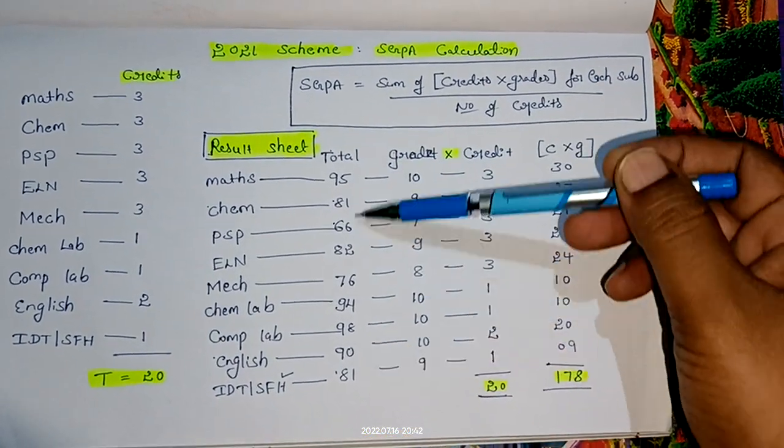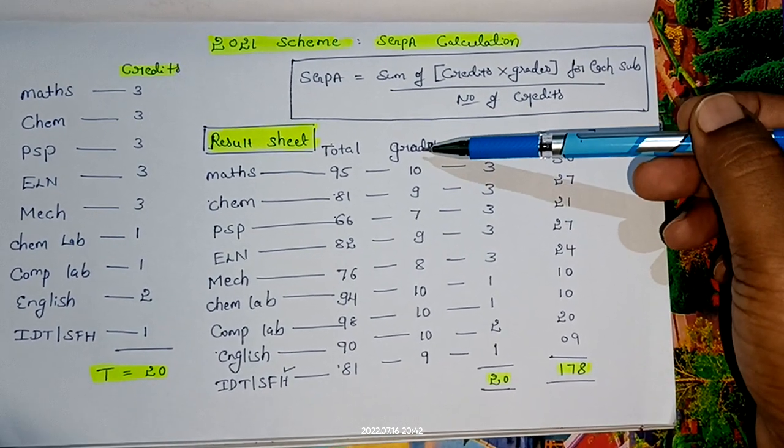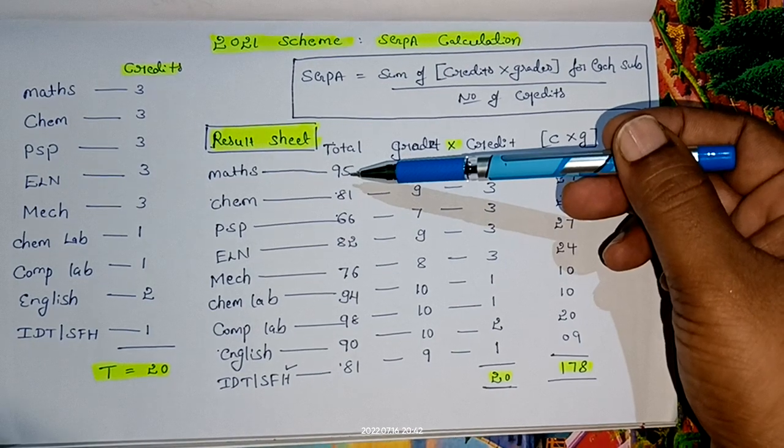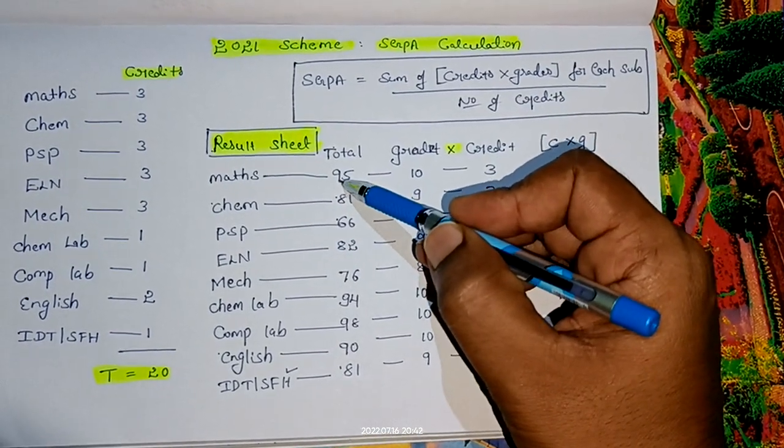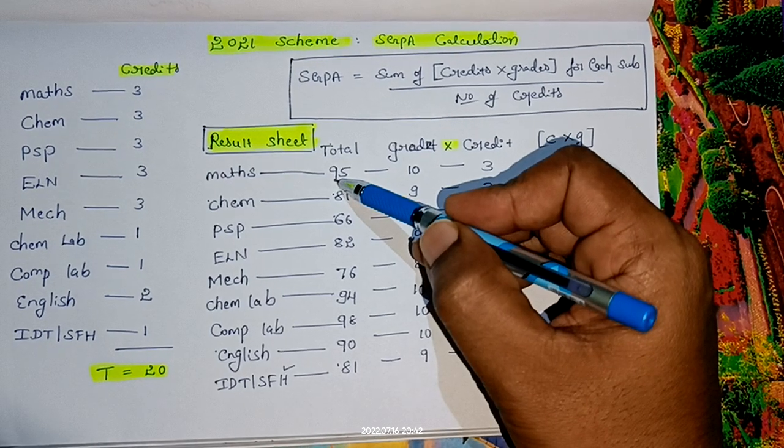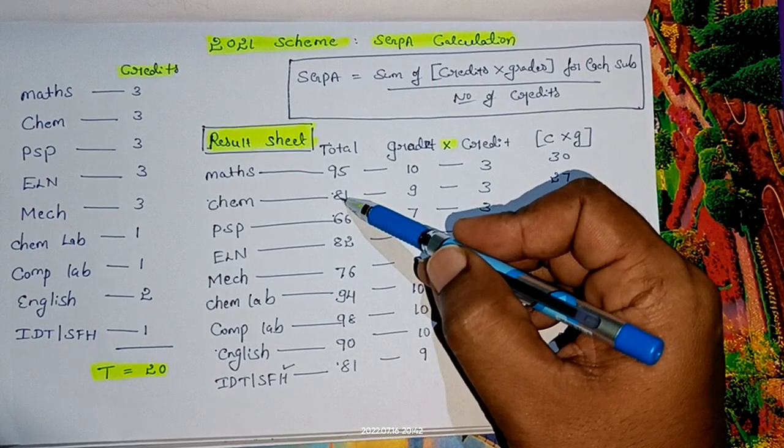Once you've got your total marks from the result sheet, the next column you should write is grades. How do you write the grades? Look at the total marks—95. Look at the first digit of this total. If it is 9, just add 1 to this 9 and you will get 10.